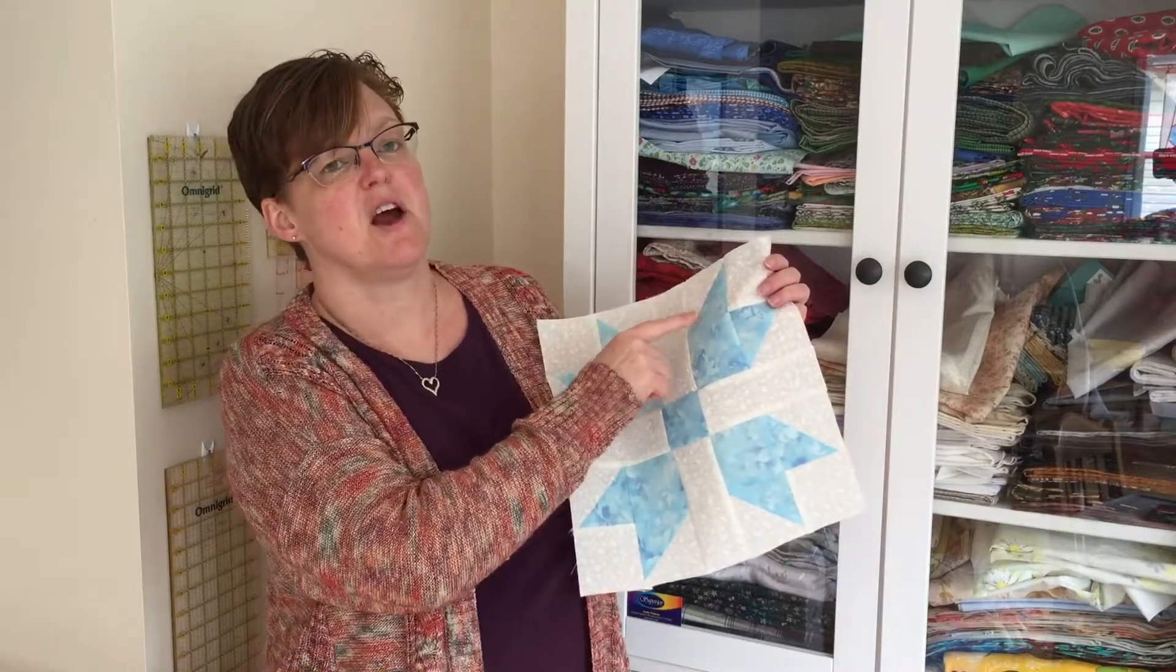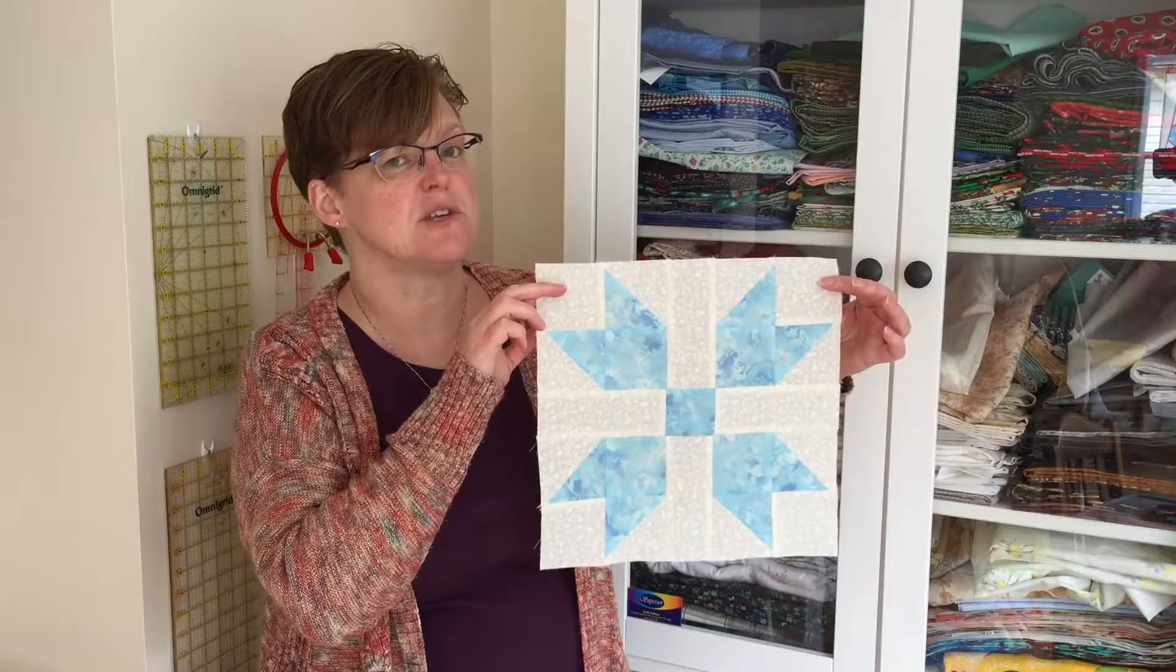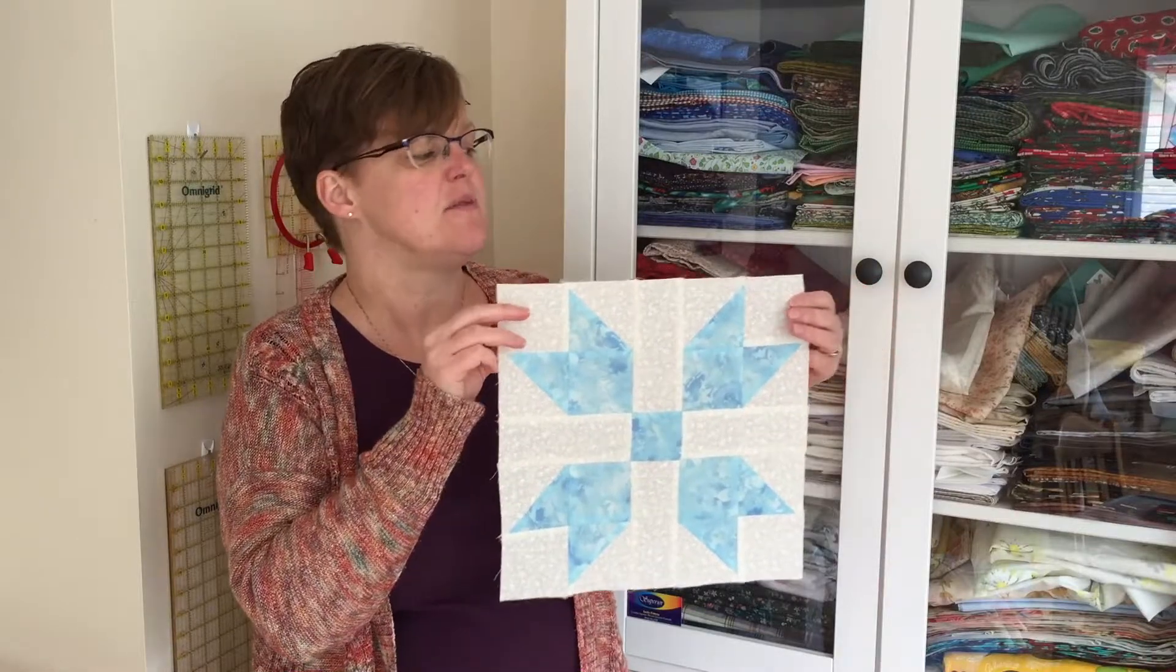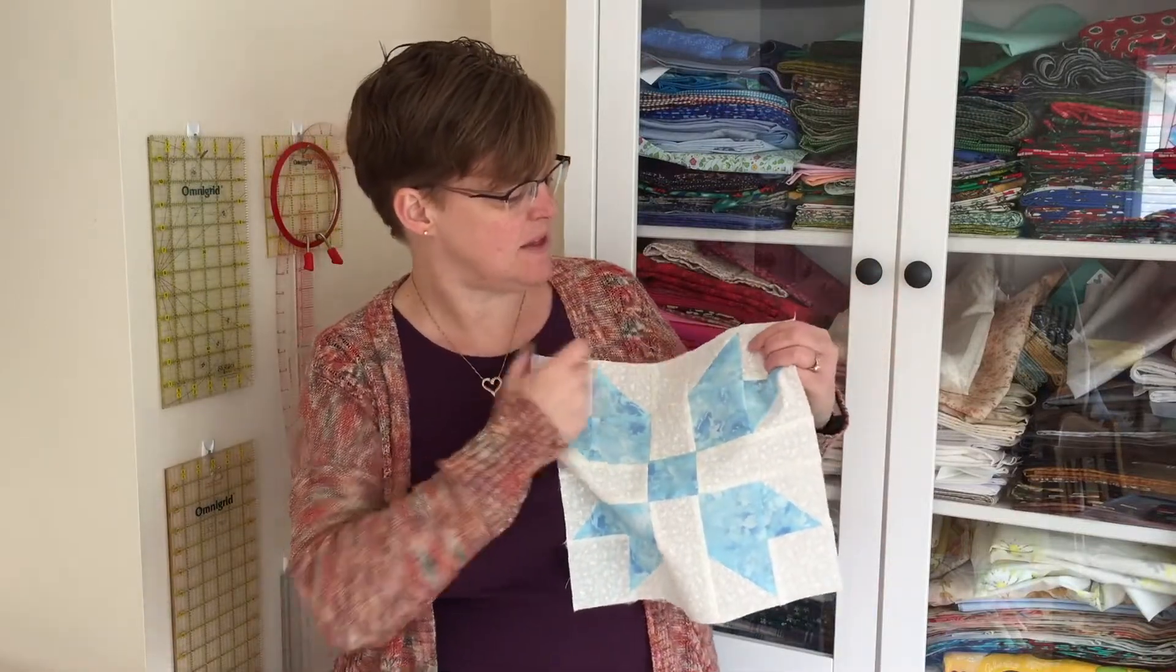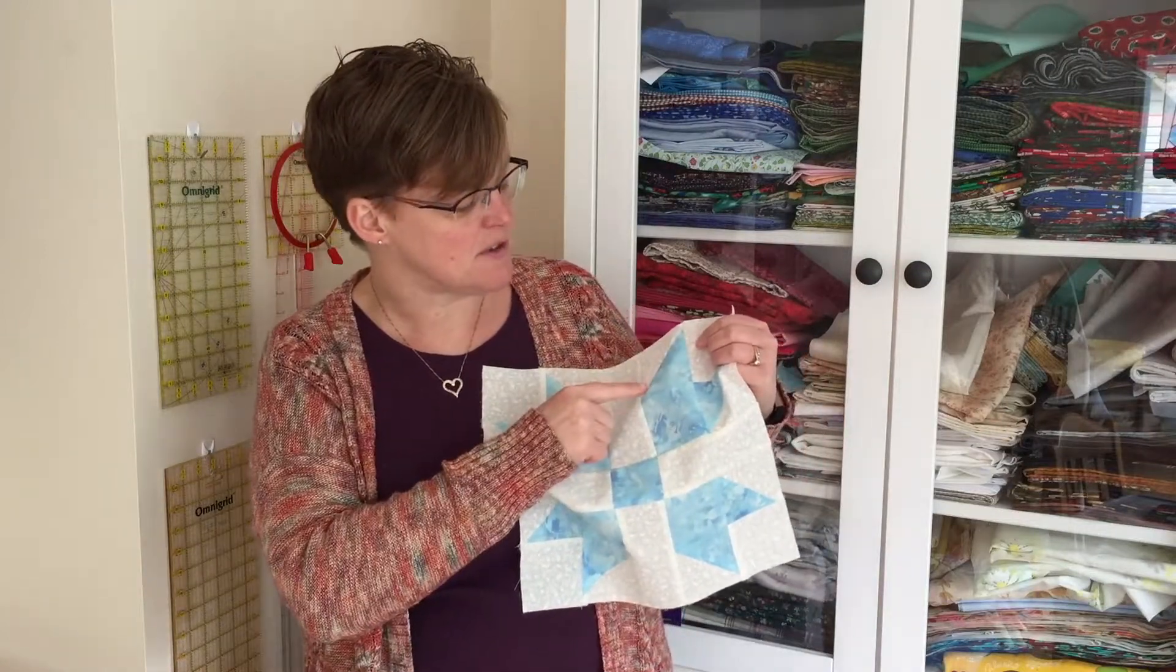Half square triangles are used in many traditional quilt patterns such as this Algonquin charm quilt block. The most obvious way to make this unit is to take two triangles and sew them together.